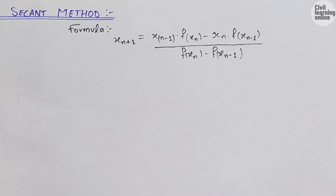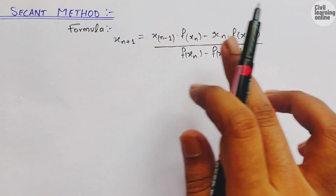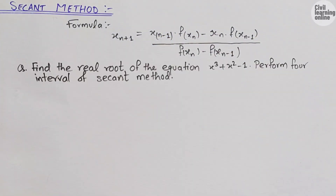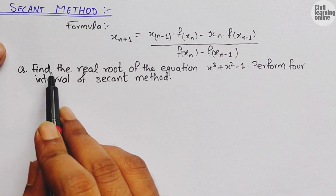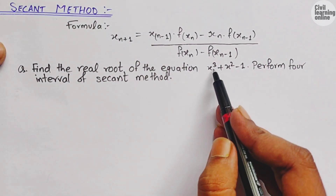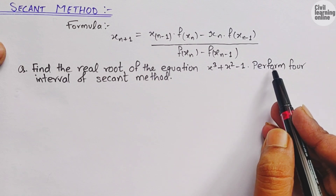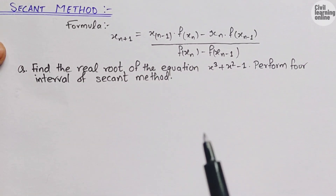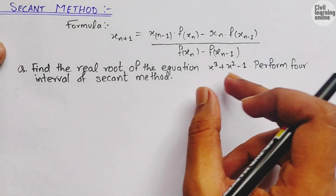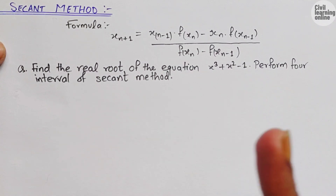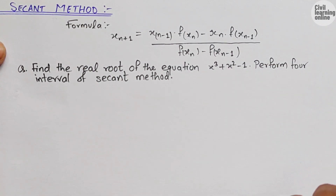You will be more clear about these terms — x_(n+1), x_(n-1), f(x_n) — when I solve an example. Here is an equation: we are asked to find the real root of x³ + x² - 1, and we are asked to perform four iterations of the secant method. First, we need to find the range within which the root lies.